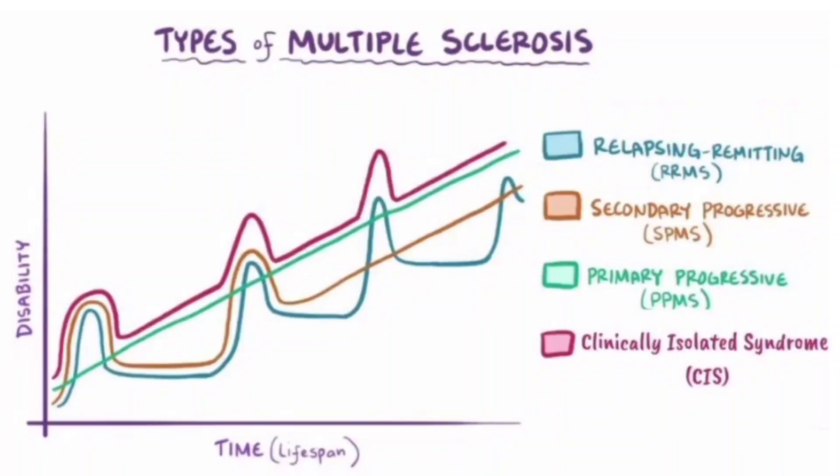Then there is primary progressive multiple sclerosis, secondary progressive multiple sclerosis, and fulminant multiple sclerosis — all of which are different types of multiple sclerosis.